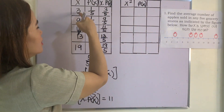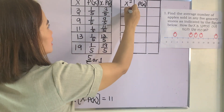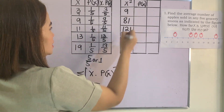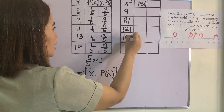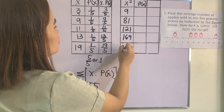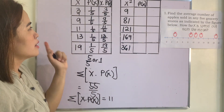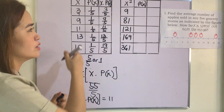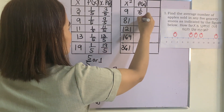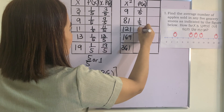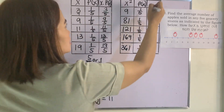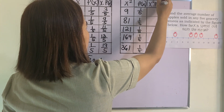We square each x value: 3² = 9, 9² = 81, 11² = 121, 13² = 169, and 19² = 361. Then P(x) is 1/5 for each value. Now we multiply x² times P(x).